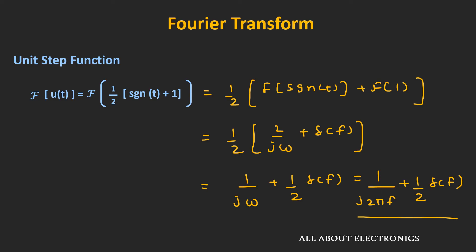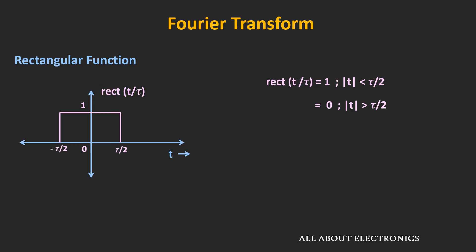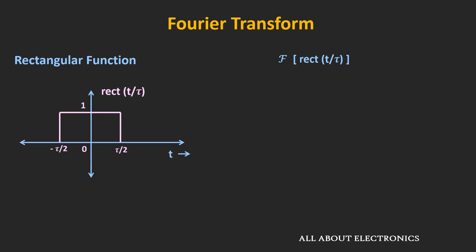So now let's see the Fourier transform of the rectangular function. Mathematically, it can be expressed as rect(t/τ). That means this rectangular function is 1 when |t| is less than τ/2, and it is equal to 0 for values of t with |t| greater than τ/2. So let's find the Fourier transform of this rectangular function. The Fourier transform is equal to integration from minus infinity to plus infinity of rect(t/τ) times e to the power minus j times 2πf dt.